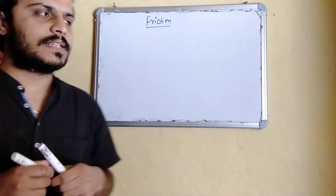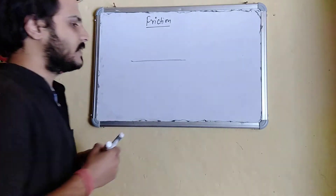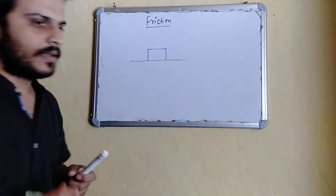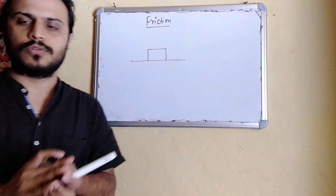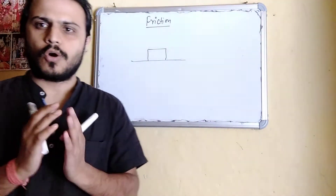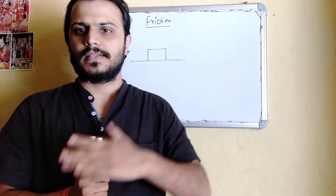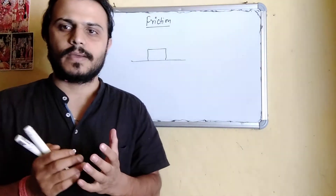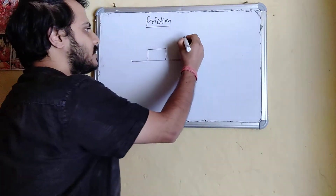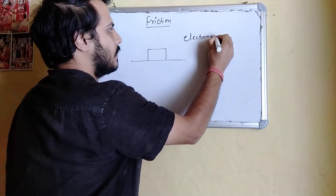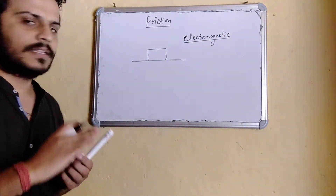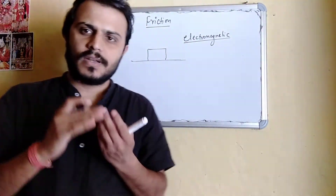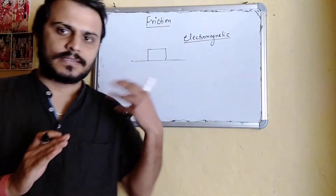First of all, we have to understand about the contact force. For example, I have two surfaces — one horizontal surface, and on this I will keep a block of mass. Now, these two surfaces are in contact with each other. When the surfaces come into close contact, the particles on the surfaces experience an electromagnetic force among them.